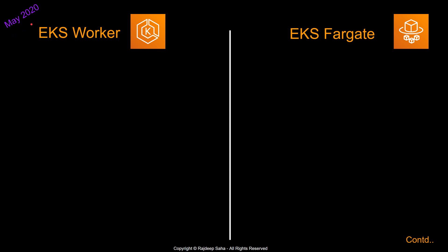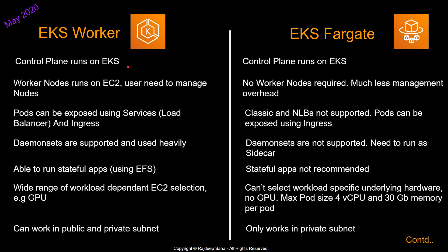Please note: this lecture was recorded in May 2020, so there are a lot of changes and developments happening with EKS Fargate, and some differences I point out here may go away over time. For both regular EKS and EKS Fargate, the control plane runs on EKS. There is no Fargate in a vacuum — to run EKS Fargate, you still need an EKS cluster, but there are no worker nodes, just the control plane.